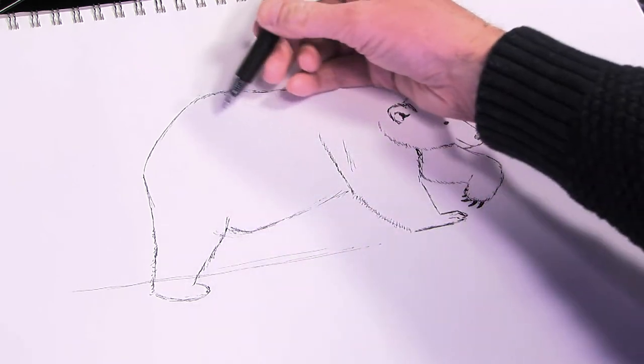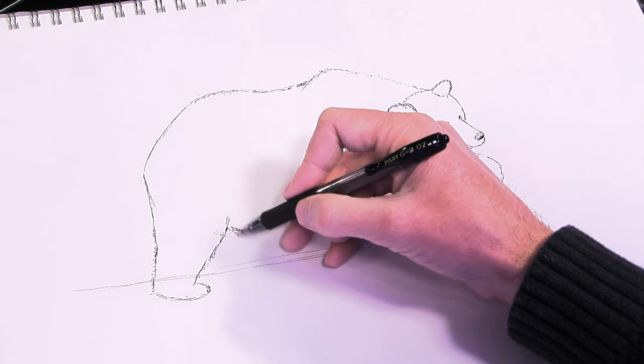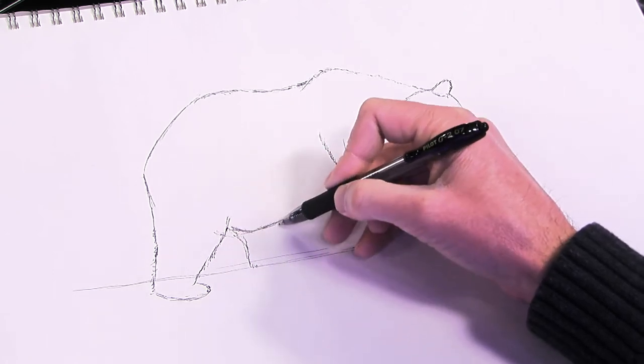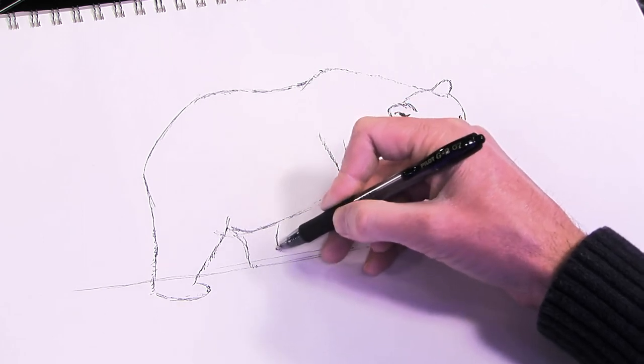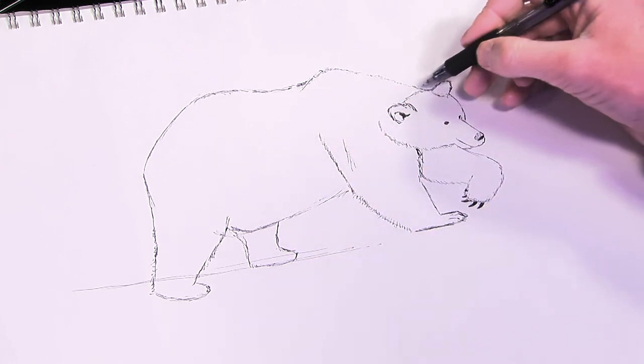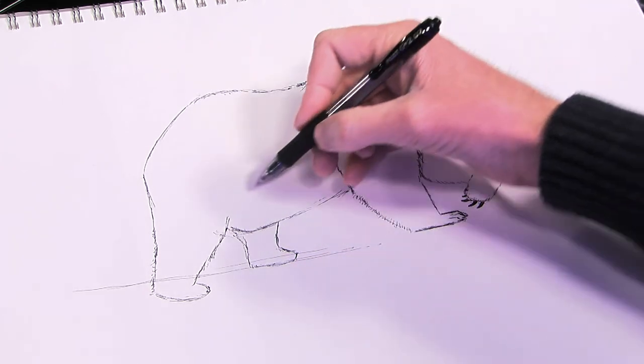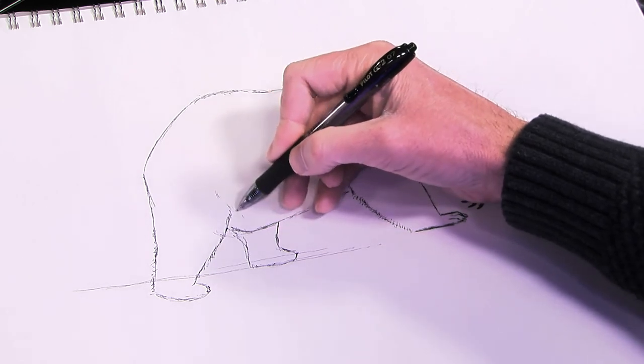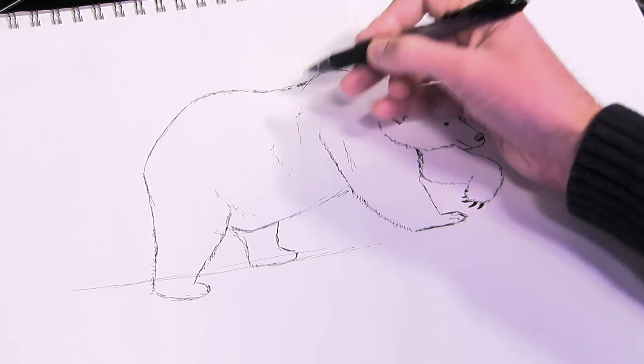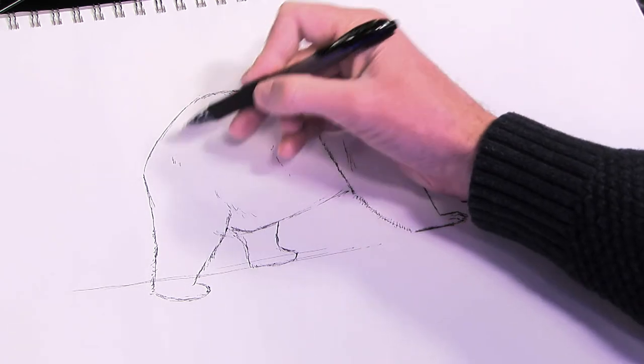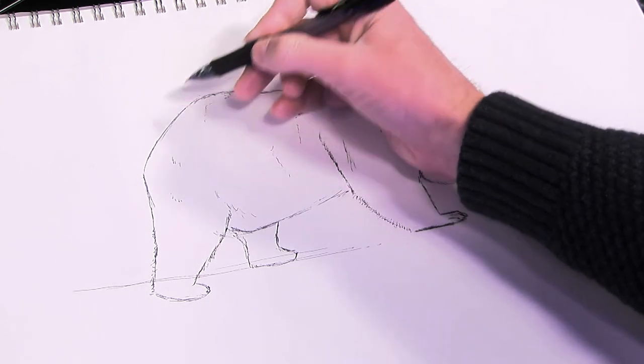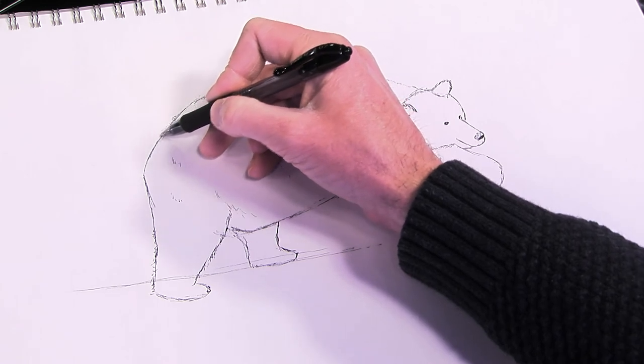And this leg is going to be squarely underneath here. About like that. And you can add in a few more scribbles along here. Kind of do some scribbles to separate some fur a little bit. And imply that this is a very hairy creature.